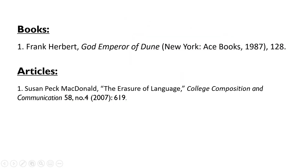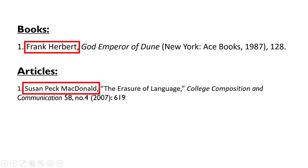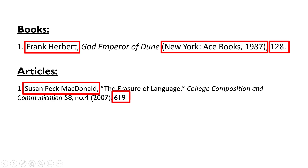Now the footnote resembles in some ways the bibliographic citation. However, there are a few major differences you should keep in mind. First, regardless of whether we're talking about articles or books, the author names are always formatted first name, last name, instead of last name first, as is done in the bibliography. Next, in the case of books, all of the publication information is surrounded by parentheses. Finally, each footnote contains the page number where the information being cited is actually located in the source in question.